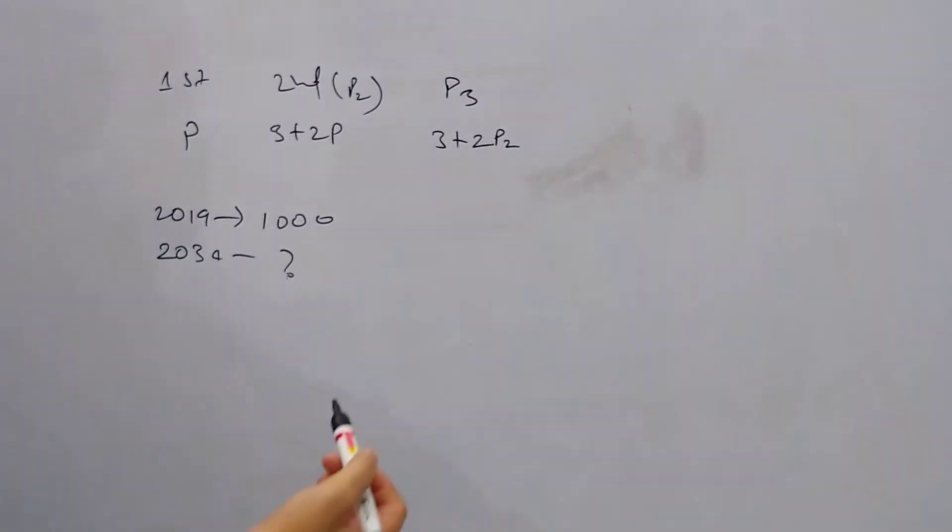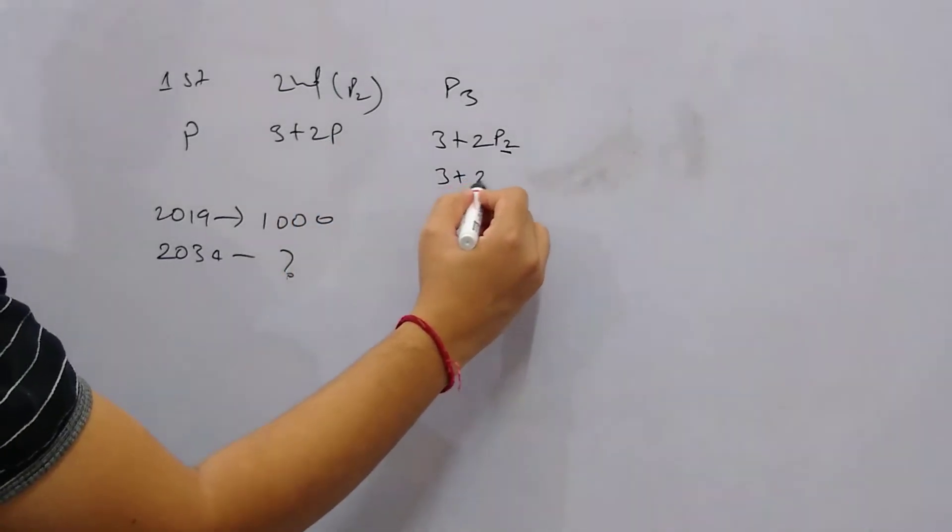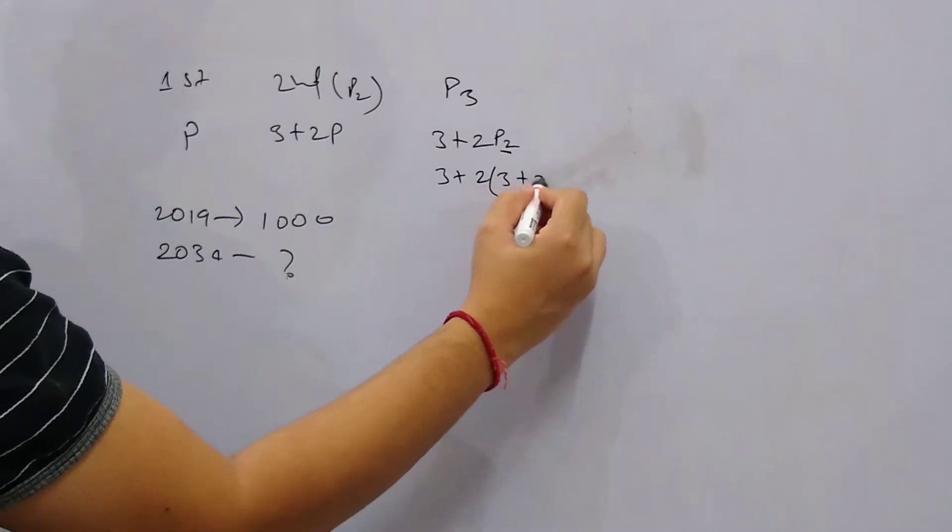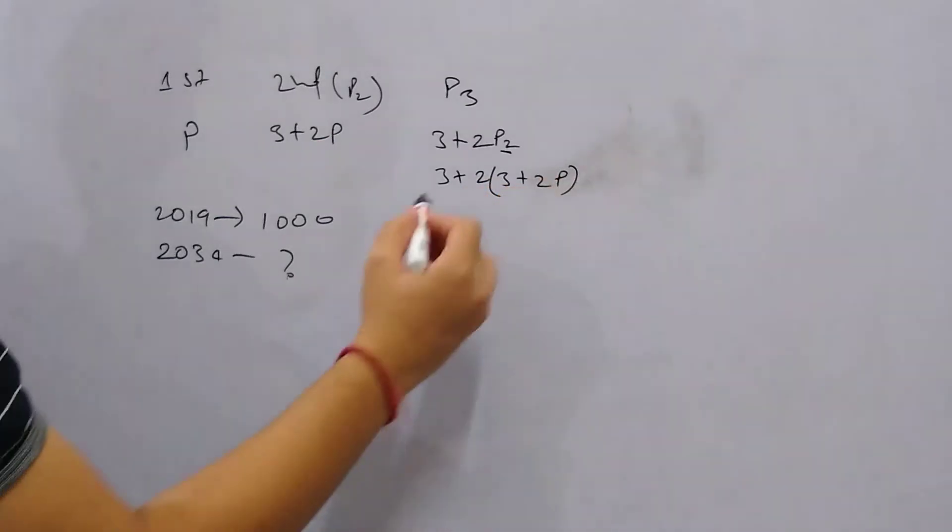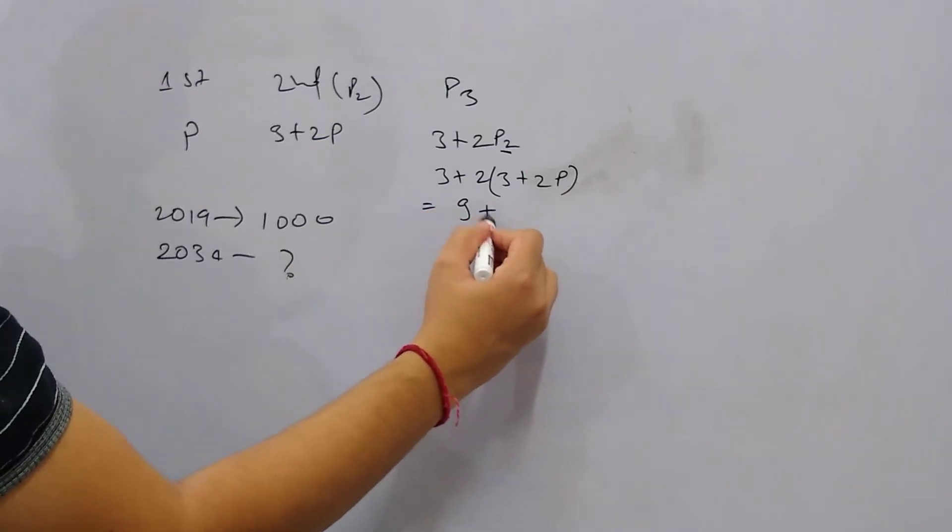p2 is population of the previous year. So in place of p2, if you put 3 + 2p, then it becomes 3 + 2(3 + 2p), so it becomes 9 + 4p.